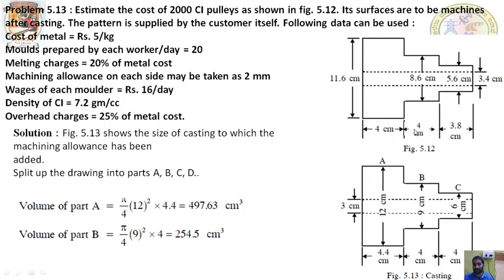To clarify why the length remains 4 cm: adding 2 mm on one side gives 4.2, then adding 2 mm on the other side shifts the face forward so that 0.2 is covered, making it 4 again. But for the outer length where we add 2 mm on both sides, 3.8 becomes 4 cm on one side, then adding 2 mm on the other side gives 4.4 cm. This is the lengthwise machining allowance applied.